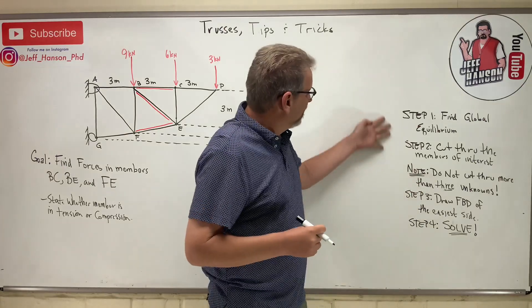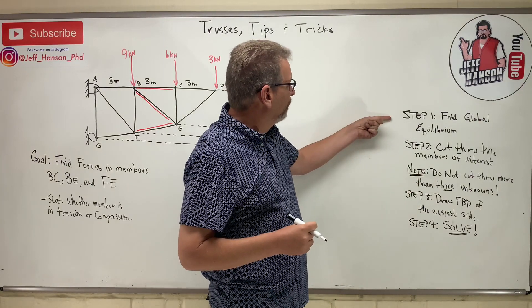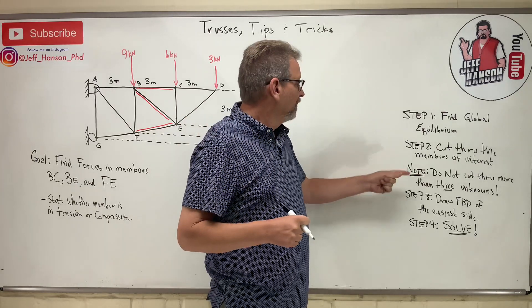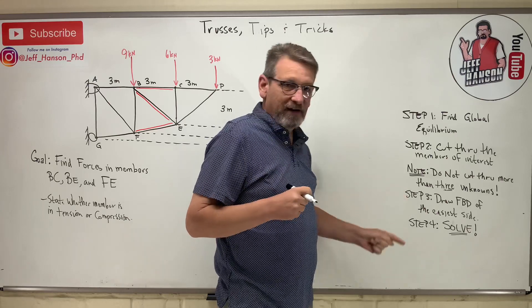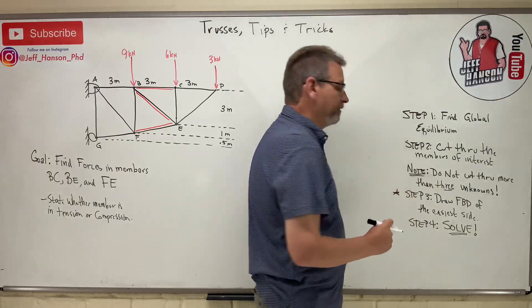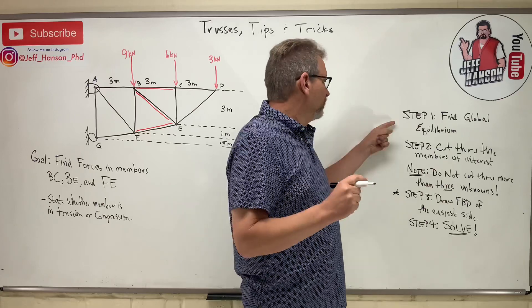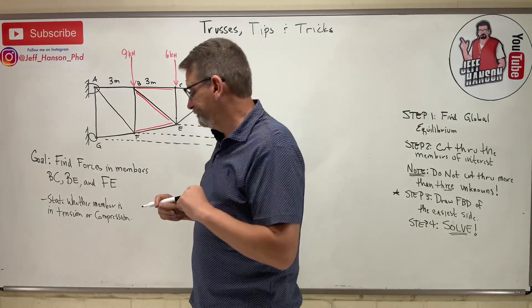I have left up here the recipe for how to solve these problems. Number one, find global equilibrium, cut through the members of interest, don't cut through more than three unknowns, and then draw the free body diagram of the easiest side. Now this is an important step this time. We'll put a little star there, because that will change our mind about step number one. Tip number one of the pros.